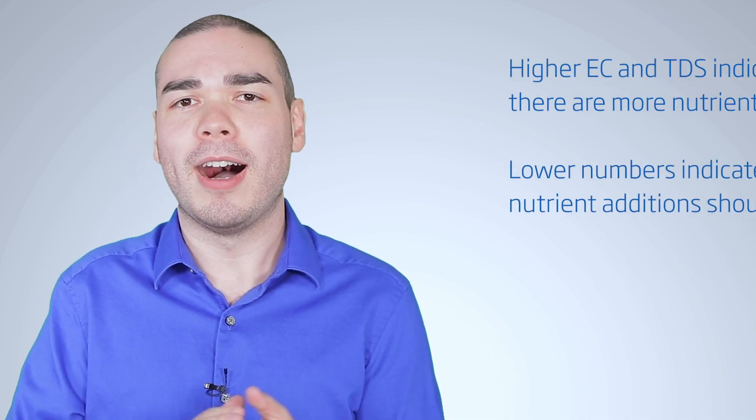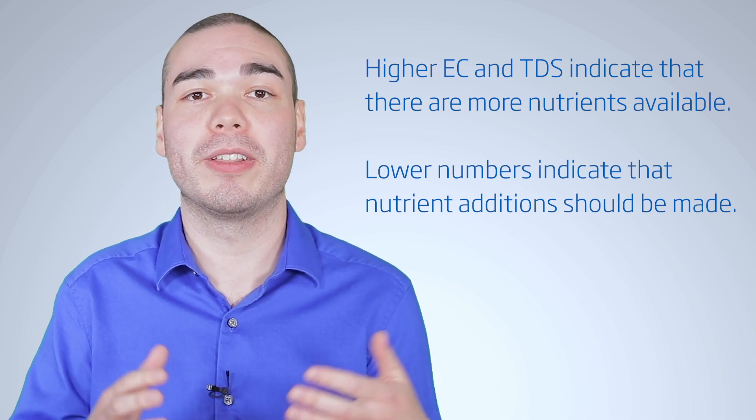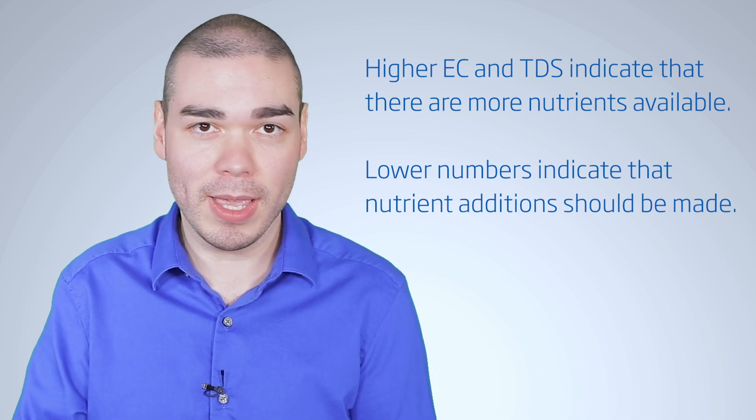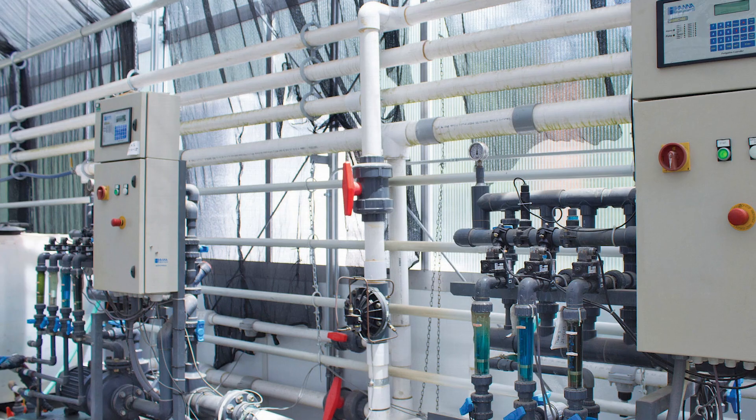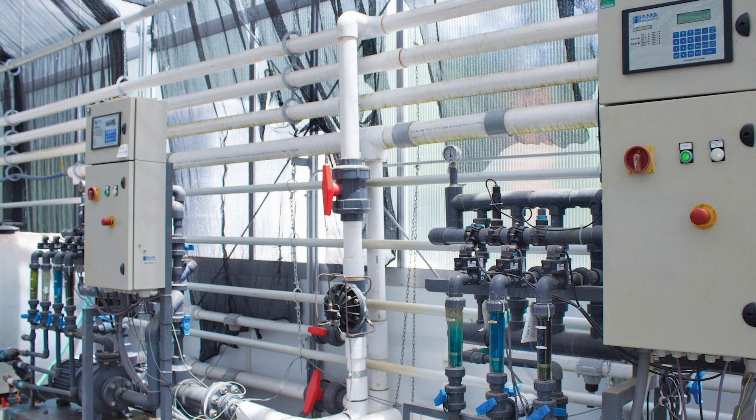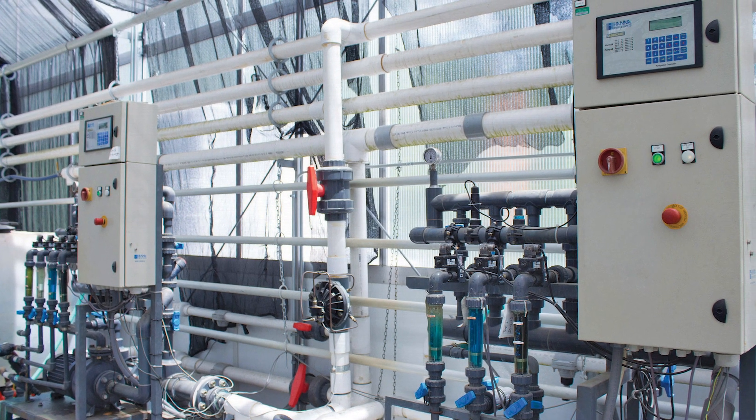When growers are looking to fertilize their crops or to maintain a growth media, it's a fine balance between the nutrients. A great way to monitor these nutrients is to measure EC and TDS regularly. Higher EC and TDS indicates there are more nutrients available, while lower numbers indicate that nutrient addition should be made. Remember, this number is nonspecific, so it won't tell you which nutrient may be deficient. Fertigators help to have a precise and efficient way to monitor EC and adjust the nutrients with measured automatic dosing.